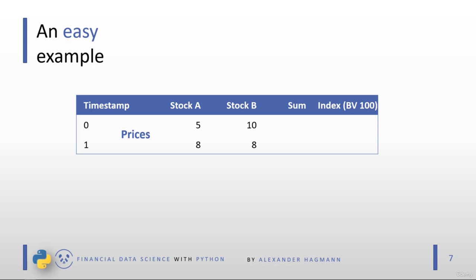To create a price-weighted index, we simply buy one share for each stock. At timestamp 0 our portfolio with two shares is worth 15, and at timestamp 1 it's worth 16 — we simply sum the stock prices. If we define the base value at timestamp 0 as 100, we can calculate the index value at timestamp 1 as 100 times 16 divided by 15, giving us 106.67. This shortcut works well for price-weighted indexes.